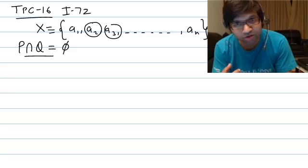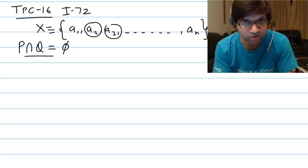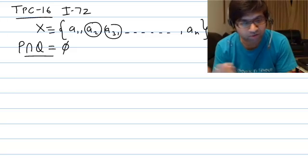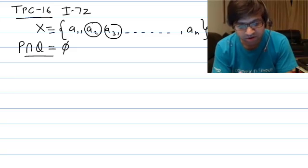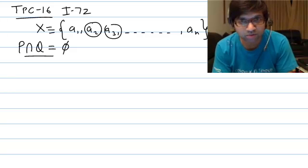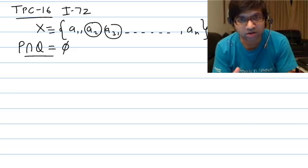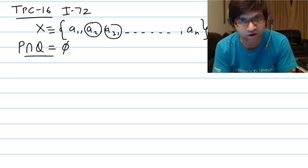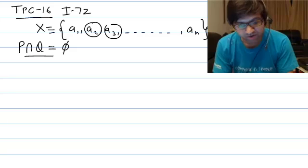Since Q is formed by replacing the elements of P, they can have common elements. The question is: in how many ways can we form subsets P and Q such that the two subsets are disjoint — that is, P intersection Q is the empty set (φ), meaning there is no common element in P and Q.